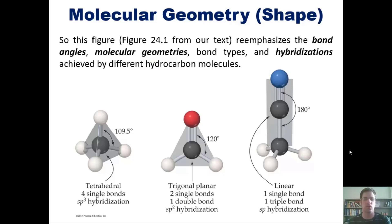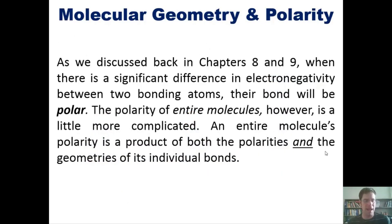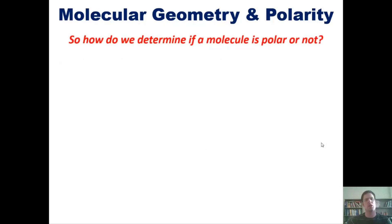Now to another subject. As we discussed in chapters 8 and 9, when there is a significant difference in electronegativity between two bonding atoms, their bond will be polar. The polarity of entire molecules, however, is more complicated. A molecule's polarity is a product of both the polarities and geometries of all its individual bonds together as a whole.